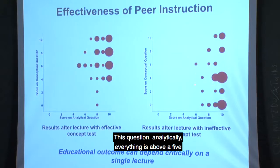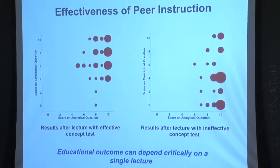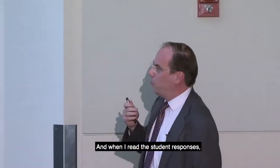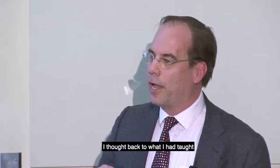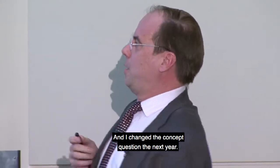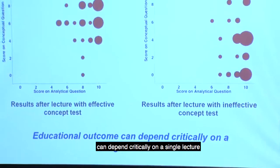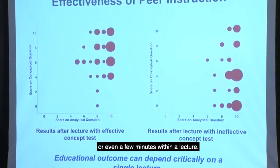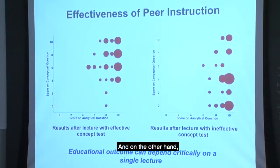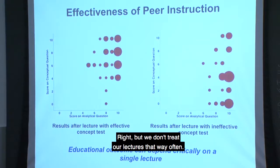But on this other question, analytically everything's above a 5, but there's a lot down here conceptually — 0, 2, 3, 4. What happened was I designed a poor concept question. When I read the student responses, I thought back to what I had taught, understood what I did wrong, and changed the concept question the next year. The lesson is that the educational outcome can depend critically on a single lecture, or even a few minutes within a lecture. We don't normally think that way, but we should — because why would you be lecturing if it weren't true?